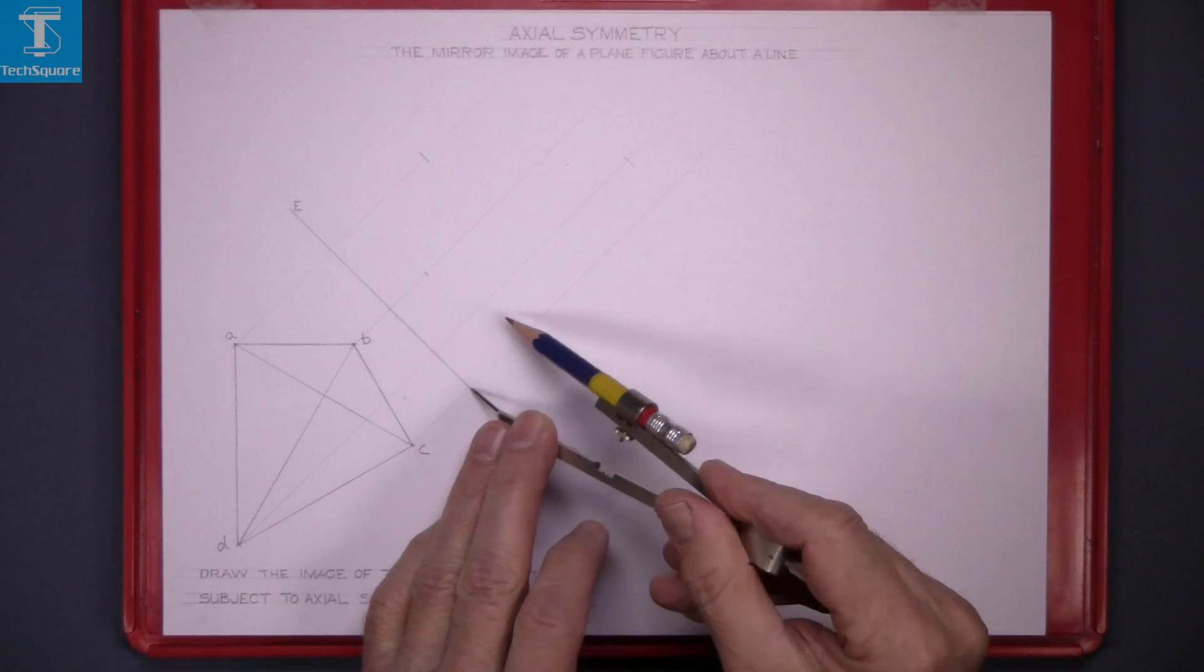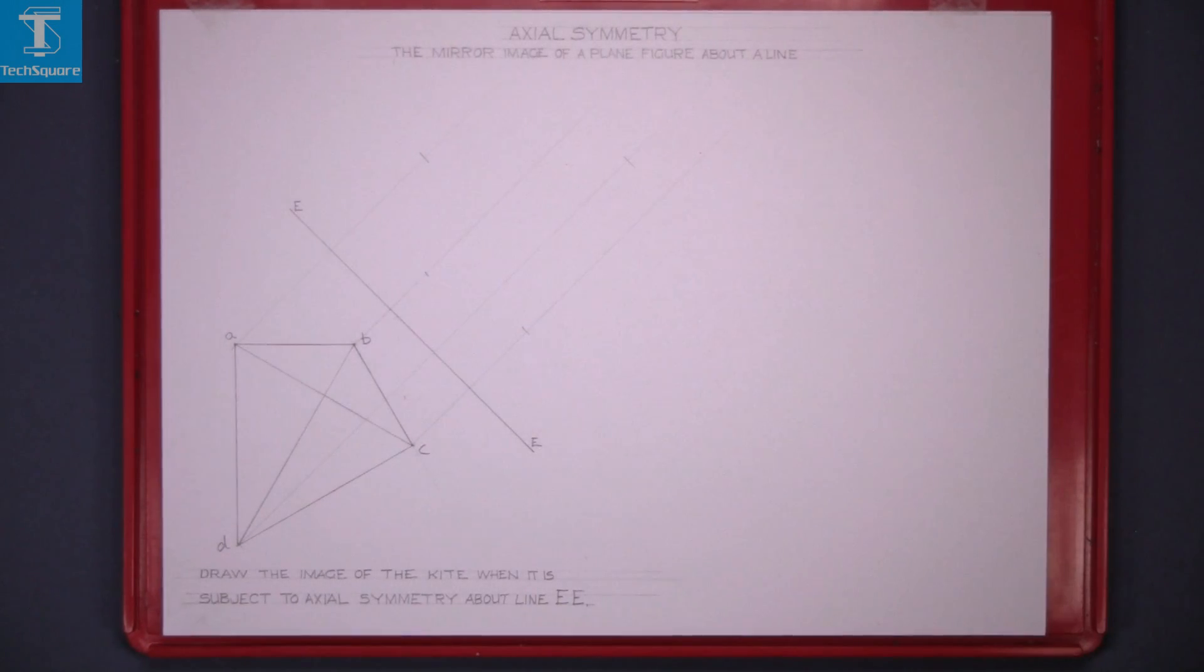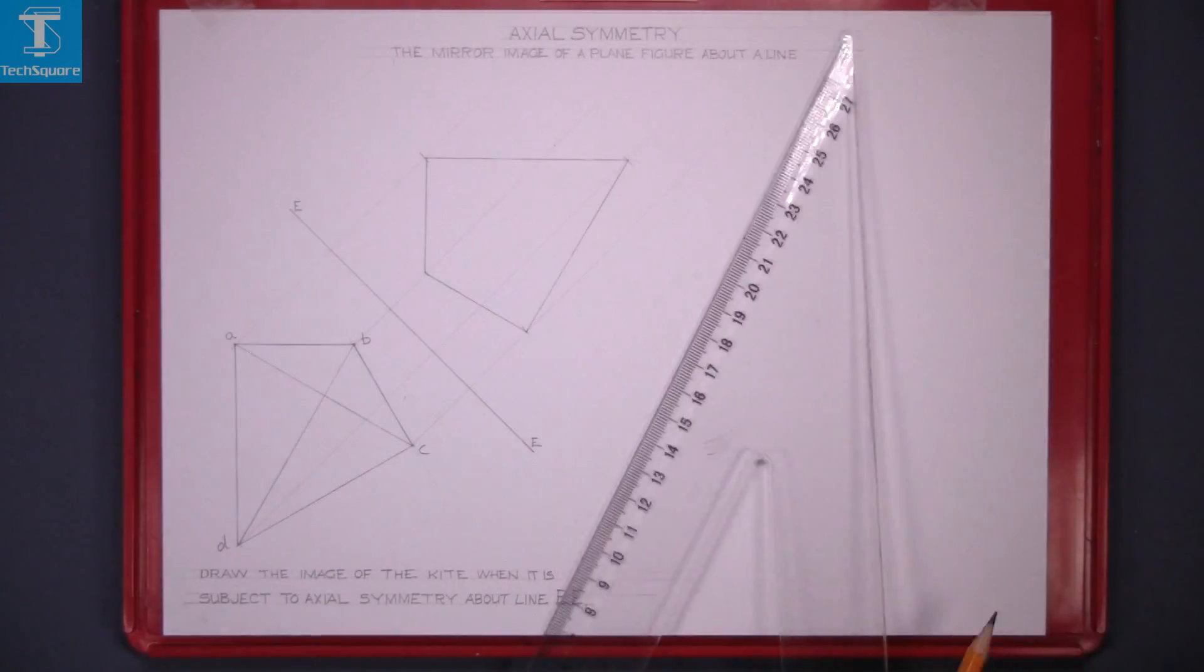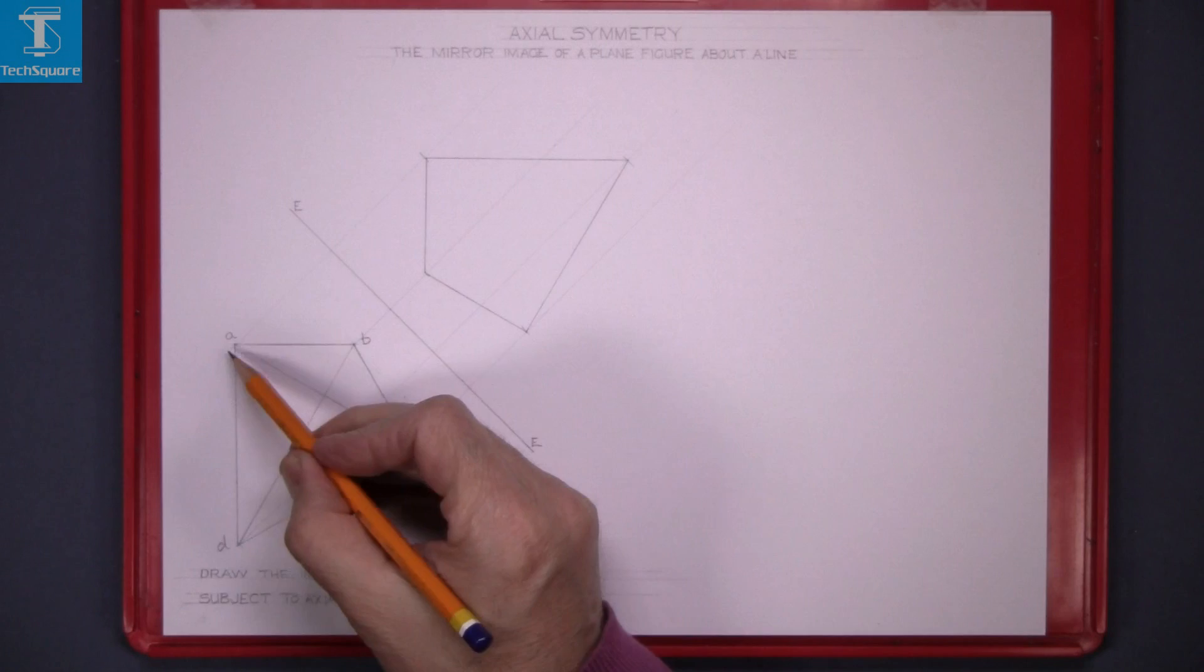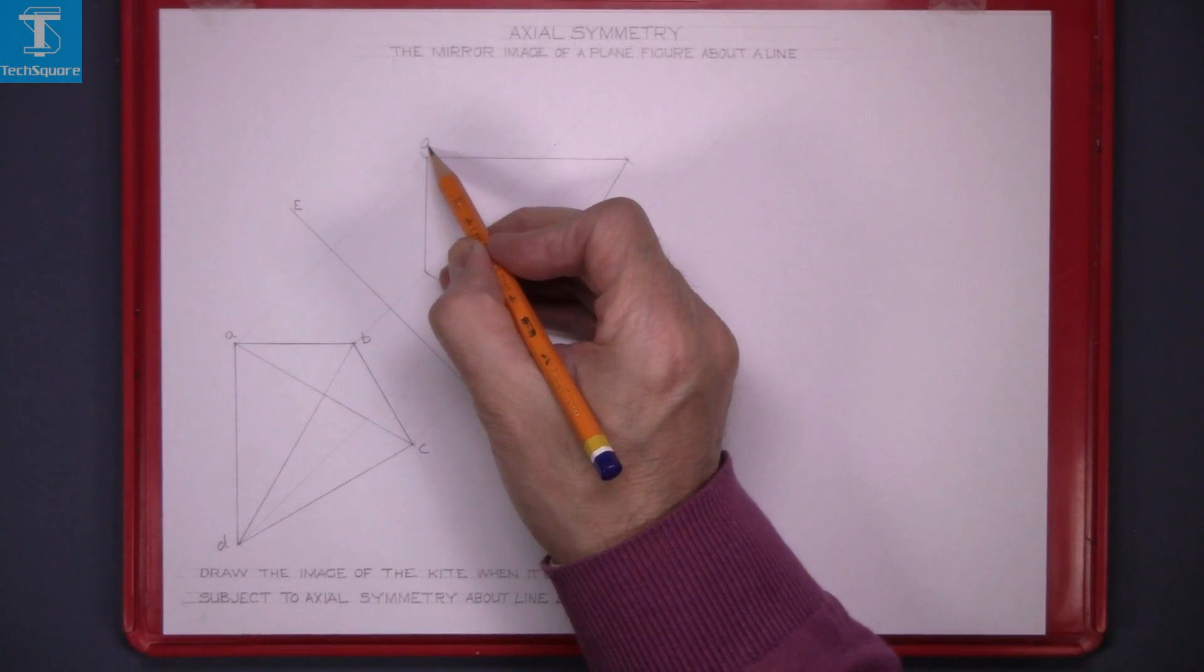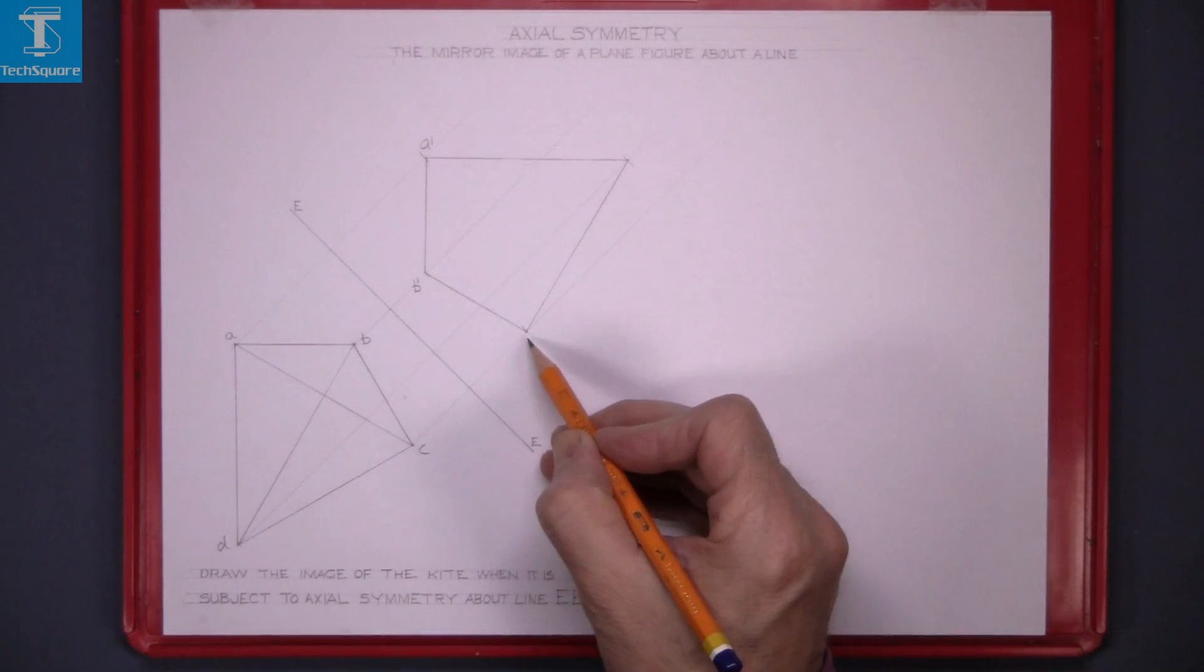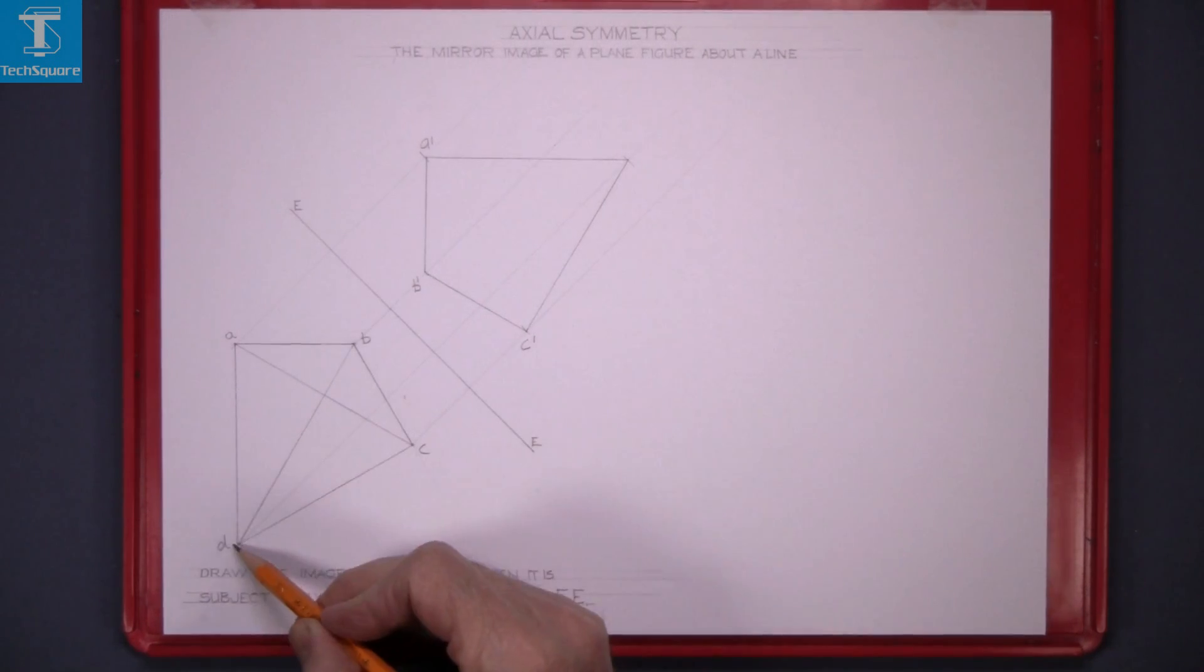And now we have found the four points for the new image. Line it in. This point is A and we call it A1. B becomes B1, C becomes C1, and D becomes D1.